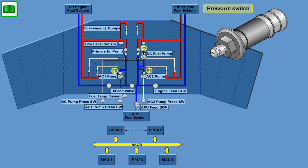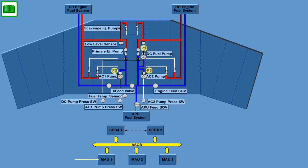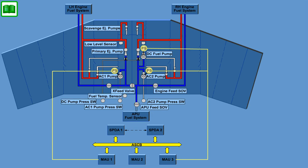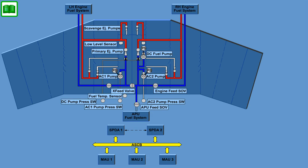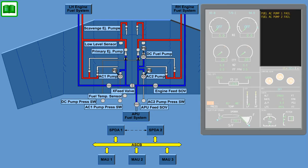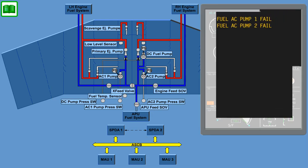Pressure switches, one for each pump, monitor the output of the electrical pumps. MAU number 1 monitors the status of the AC pump 1 pressure switch, and MAU number 3 monitors the status of the AC pump 2 and the DC start pump pressure switches. Each MAU transmits the data on the ASCB for ICUS display and control functions. The ICUS messages Fuel AC1/2 pump fail or Fuel DC pump fail indicate that the respective pump is not operating properly.